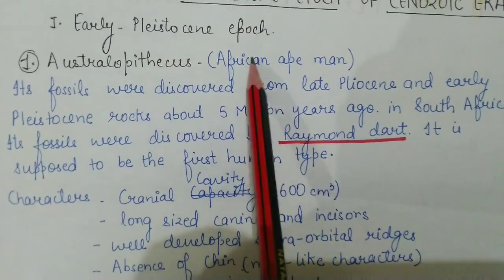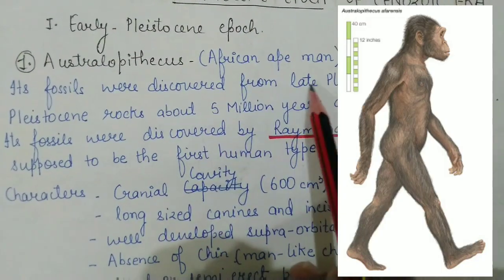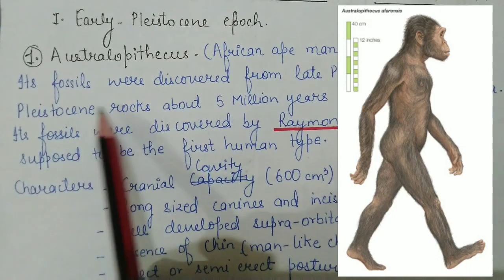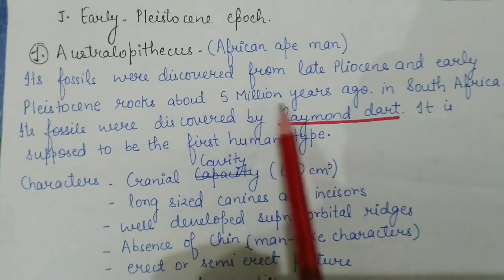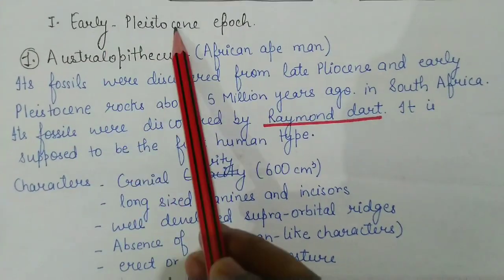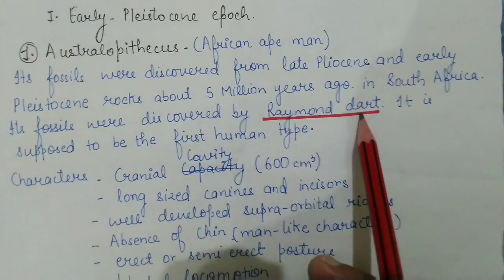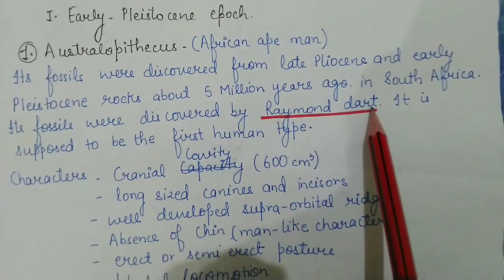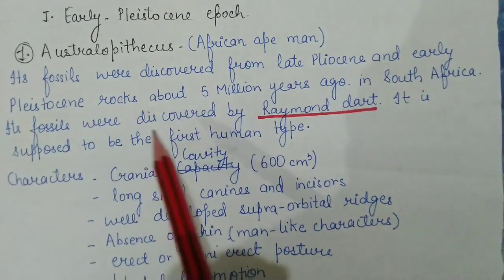Australopithecus, also known as the African Ape Man, had its fossils discovered from early and late Pleistocene rocks, about 5 million years ago in South Africa. The scientist behind this discovery is Raymond Dart. He discovered the fossils of Australopithecus, which is supposed to be the first human type — the very start of characters very similar to humans.